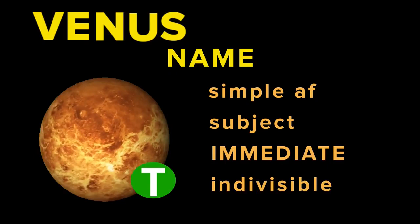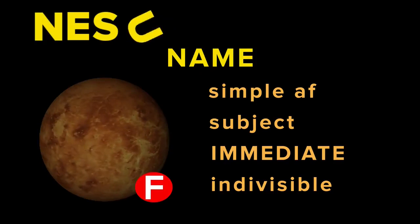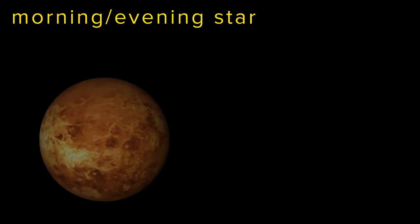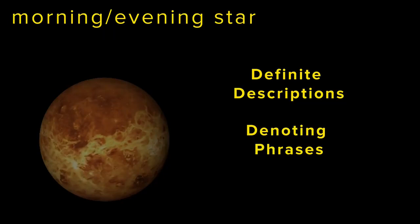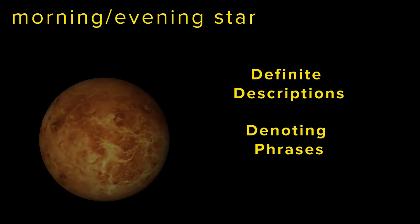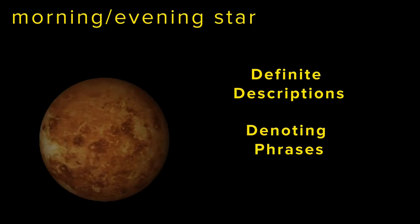Furthermore, a name is indivisible — it cannot be broken up into smaller symbols while still meaning and referring to the same thing. The morning and evening star, however, are not names but definite descriptions or denoting phrases. Definite descriptions consist of several words whose meanings are fixed. A description describes the thing being named in such a way where the description itself requires further analysis.